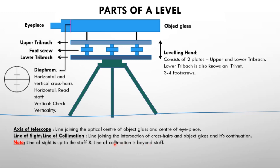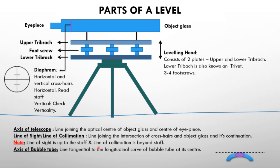The line of sight is the same as the line of collimation — the line joining the intersection of crosshairs and the object glass, and its continuation toward the staff. The bubble tube is a curved tube; when the bubble comes to the center, the level is correct. It is also called the level tube.